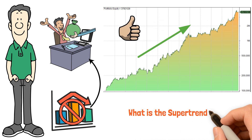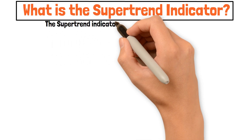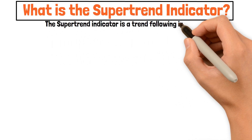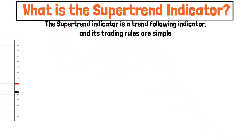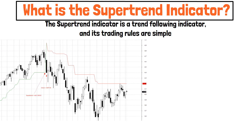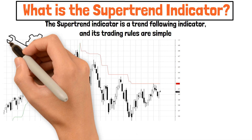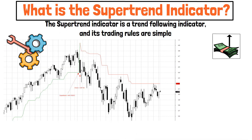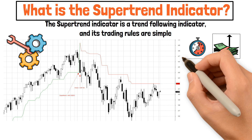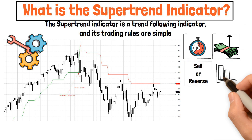First off, what is the Supertrend Indicator? The Supertrend Indicator is a trend-following indicator and its trading rules are simple. The chart on the screen shows how the Supertrend Indicator works. When the price is above the indicator, you're long and you sell or reverse when it drops below.